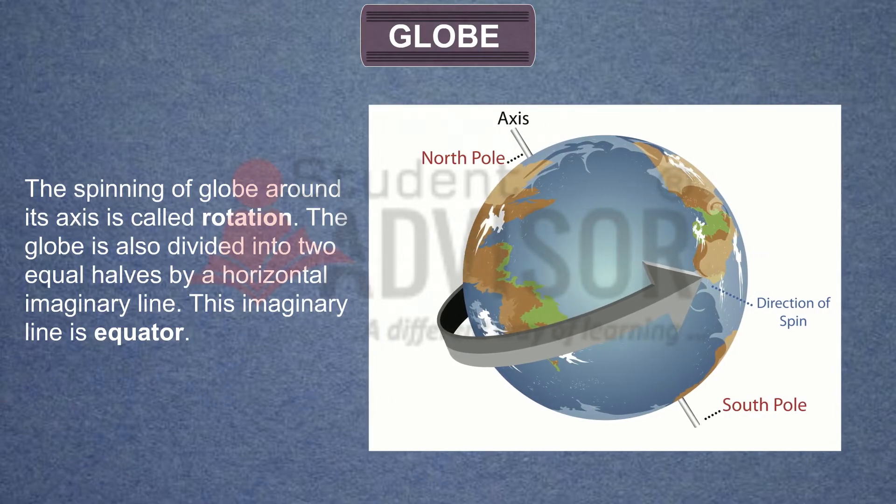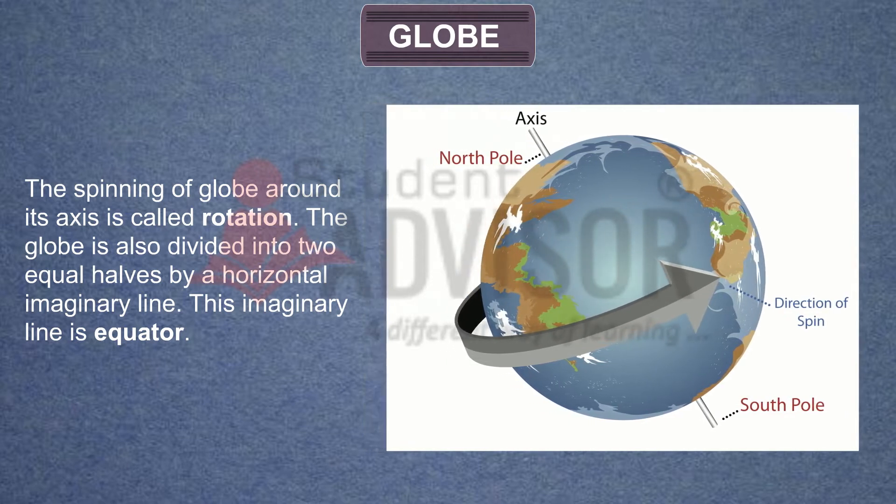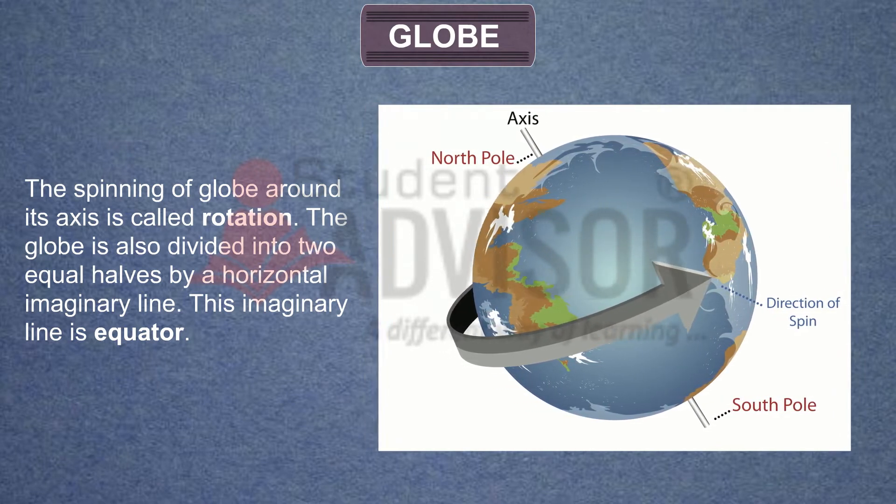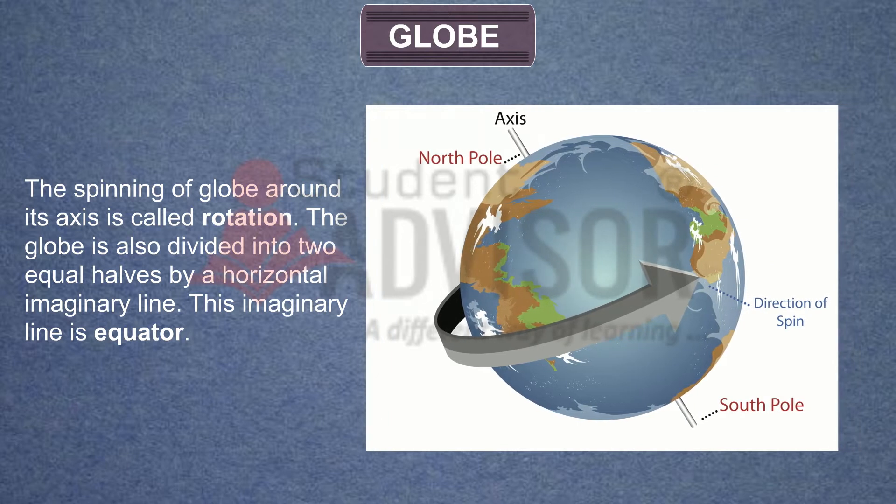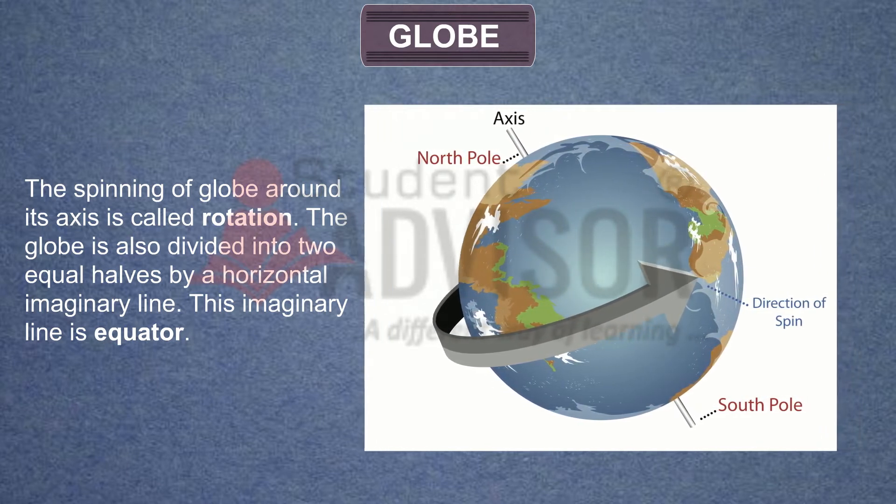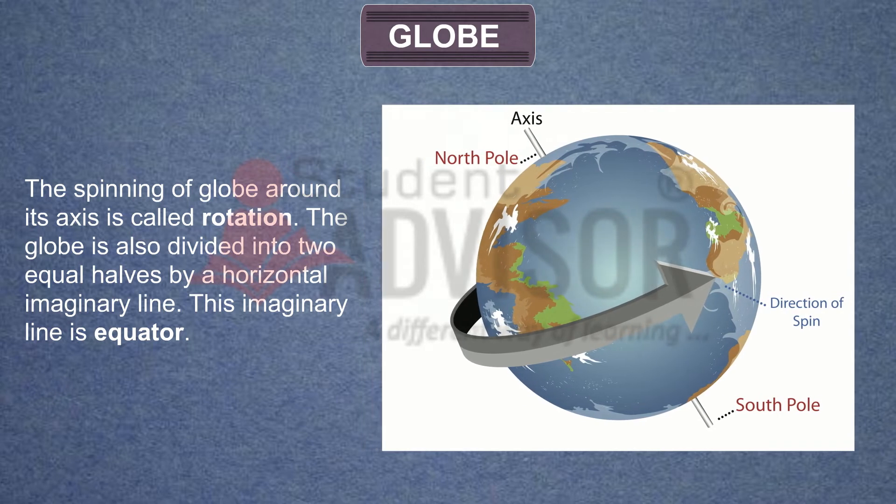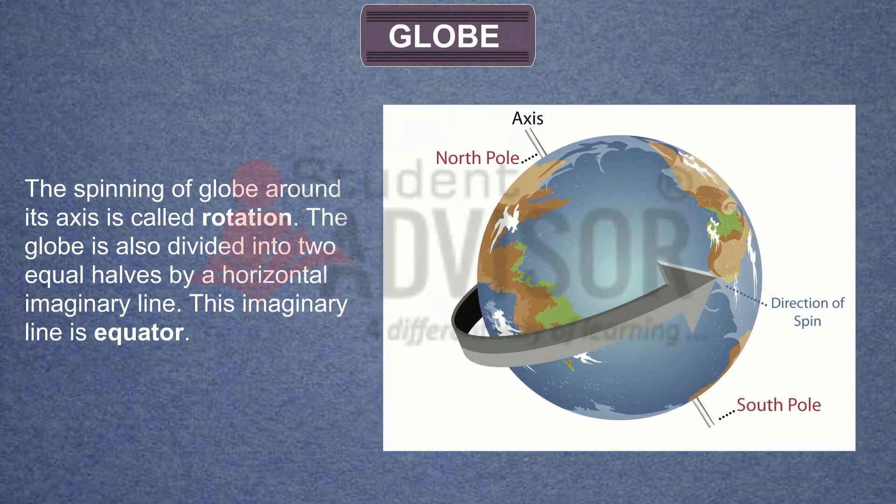The spinning of globe around its axis is called rotation. The globe is also divided into two equal halves by a horizontal imaginary line. This imaginary line is equator.